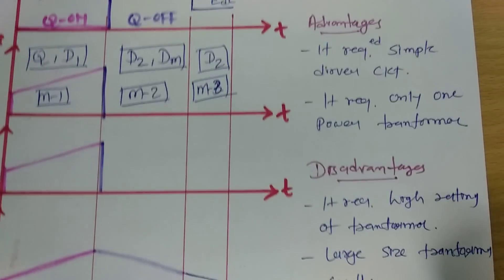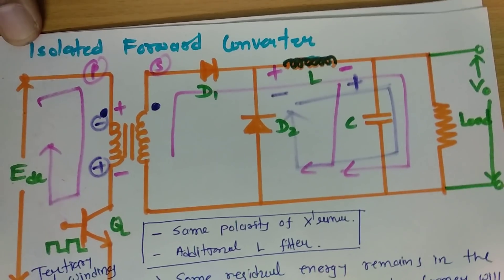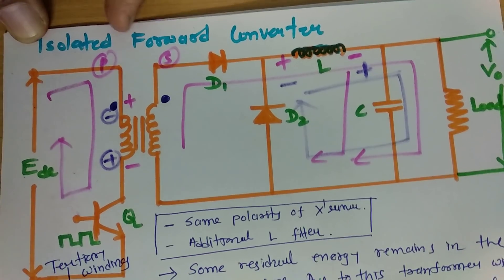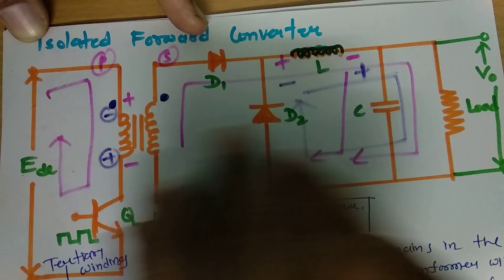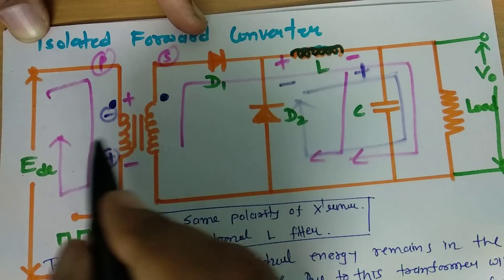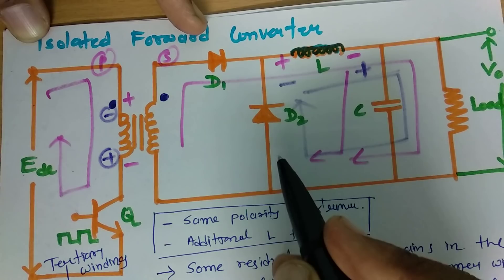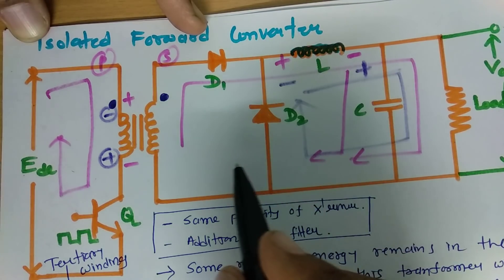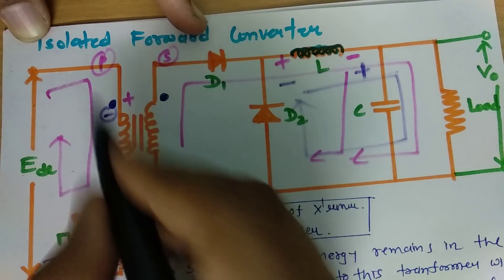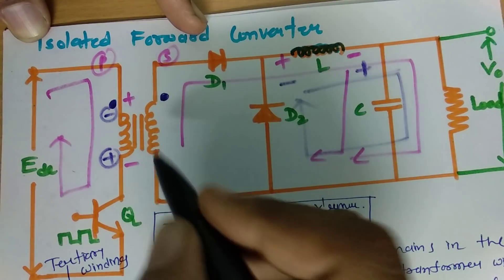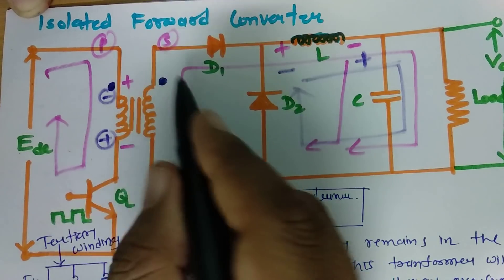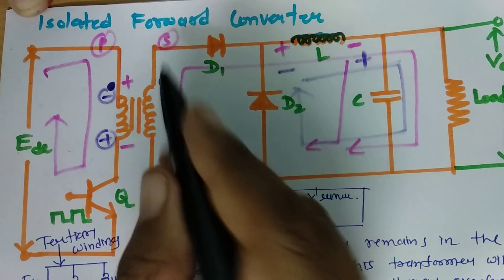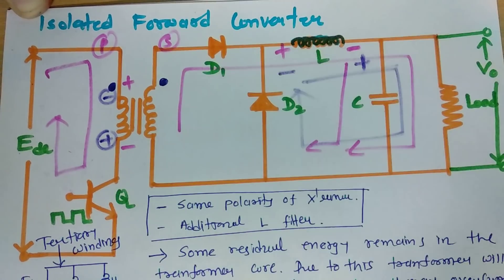This circuit is isolated, as I have already mentioned — it is the isolated forward converter. It is basically a forward converter but the input and output are isolated. Because of this isolation, we can use this circuit for multiple outputs, which is why it is called the isolated forward converter.